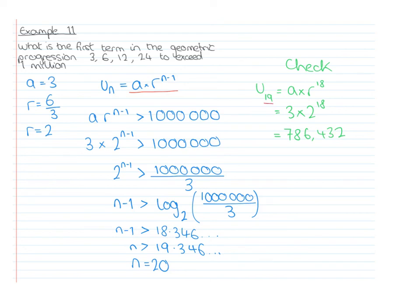We can already see it's going to happen because obviously it's going to be twice as big as the previous term. It's 1,572,864. Therefore, the 20th term is the first term to exceed 1 million.